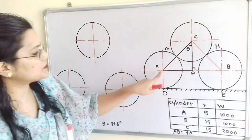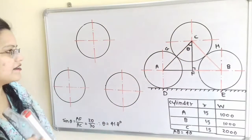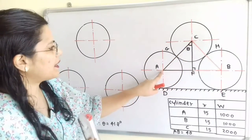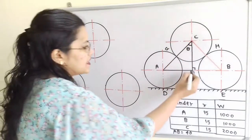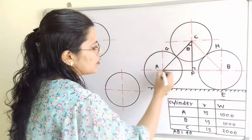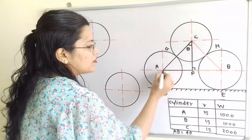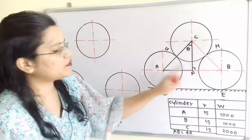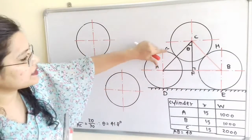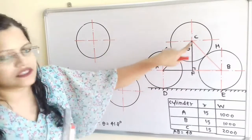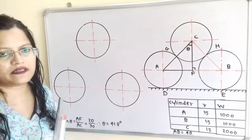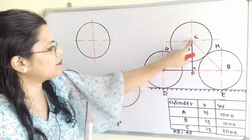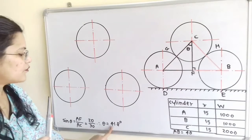To find theta, we observe that triangle AFC is a right-angle triangle. Therefore, sine of theta equals AF divided by AC. The perpendicular from C meets AB at F, which is the midpoint of AB. So AF equals 40 divided by 2, which is 20. The length AC equals the sum of the radii of cylinders A and C, that is 15 plus 15, which is 30. Therefore, sine of theta equals 20 divided by 30, and theta equals 41.8 degrees.